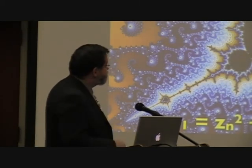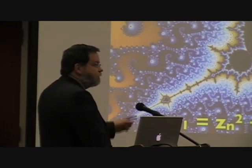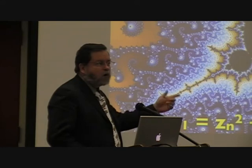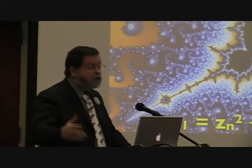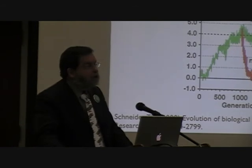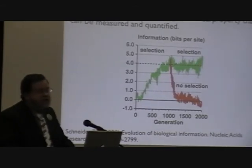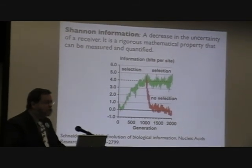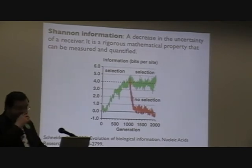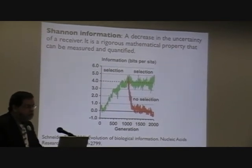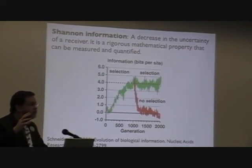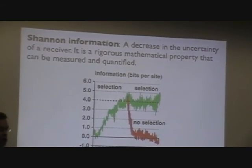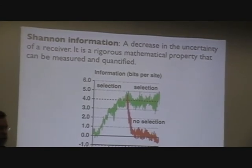Now, in science it's not enough to just say 'gee, that looks complicated' or 'that driftwood wall looks complicated' or 'that brick wall looks simple.' You've got to have a measure of complexity. In science we have a couple of ways of measuring complexity — I'll mention one: it's called Shannon information. Shannon information has been around for 50 or so years; it's well-established and mathematically rigorous. It's a solid way to calculate the information content of something. Shannon information is a decrease in the uncertainty of a receiver — that is, when you receive some information, it resolves uncertainty. You now know something about the state of the sender. It's a rigorous mathematical property: you measure it, you quantify it.